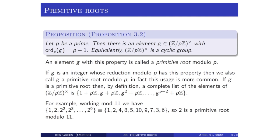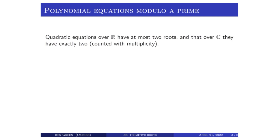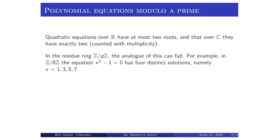Those are the key statements about primitive roots. Before we get to the proof of the proposition itself, we need to take a detour into some results from ring theory about roots of polynomials — some general and some more specific to the setting at hand. Let's look at polynomial equations modulo a prime. You all know that quadratic equations over the reals have at most two roots, sometimes two, sometimes none, and over the complexes they have exactly two roots counted with multiplicity. But the analog of this in z mod q z can fail.